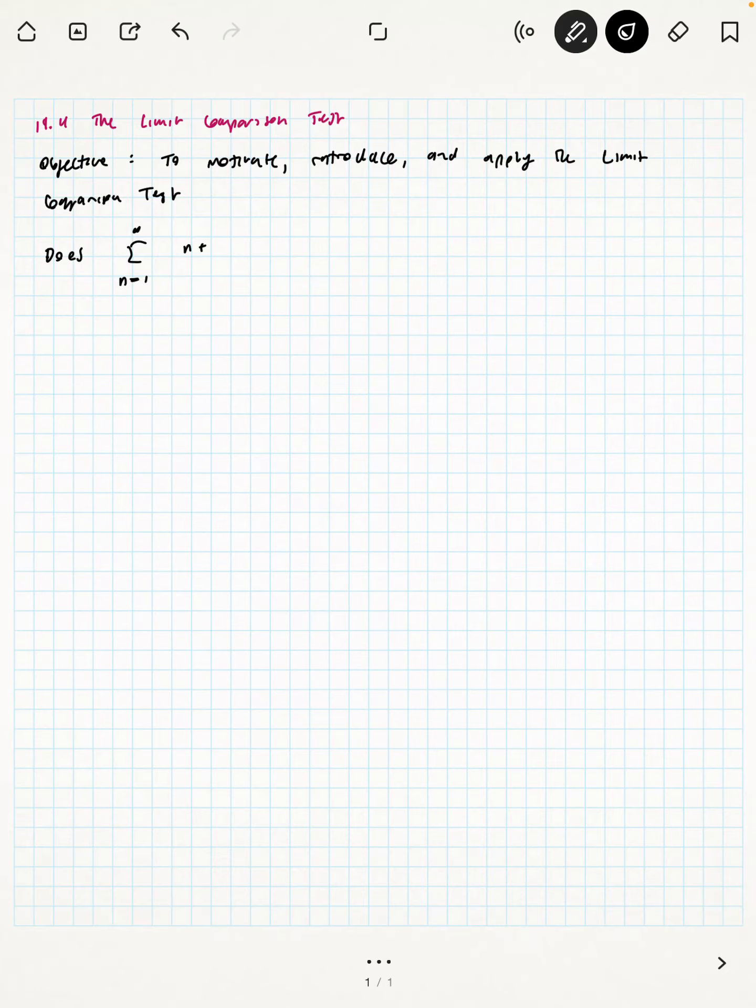So let's think about a concrete example. Does the series n equals 1 to infinity of n plus 3 to the n over n plus 2 to the n converge or diverge? And so here's the thing. We want to continue to use our intuition to guide us in whether we confirm that it converges or diverges.